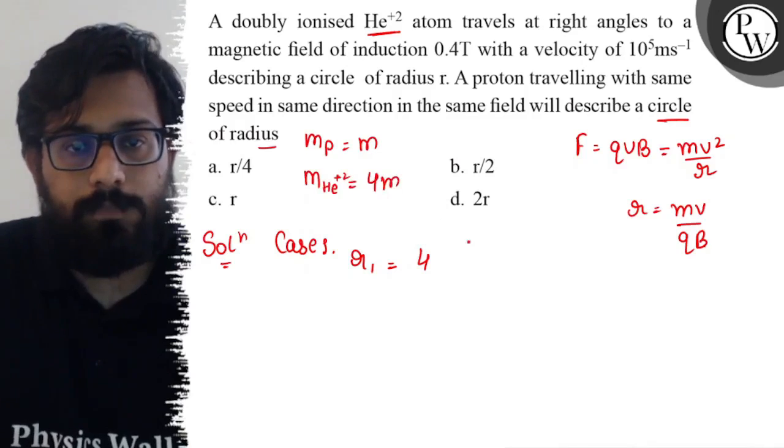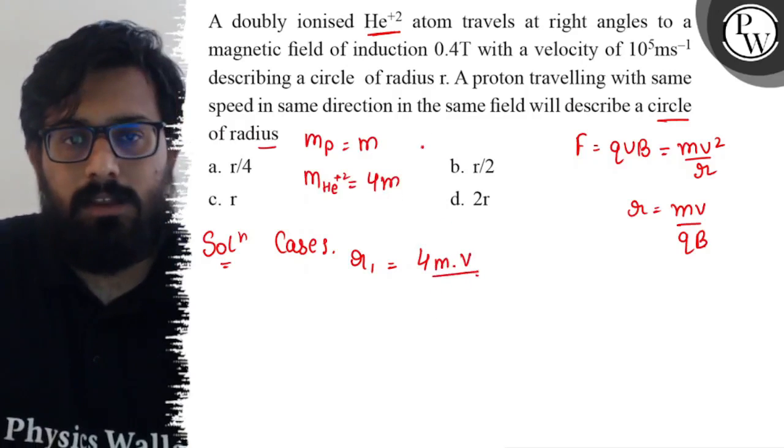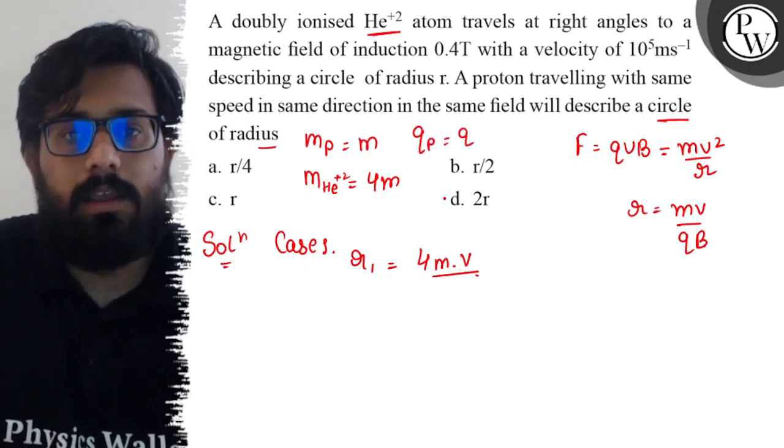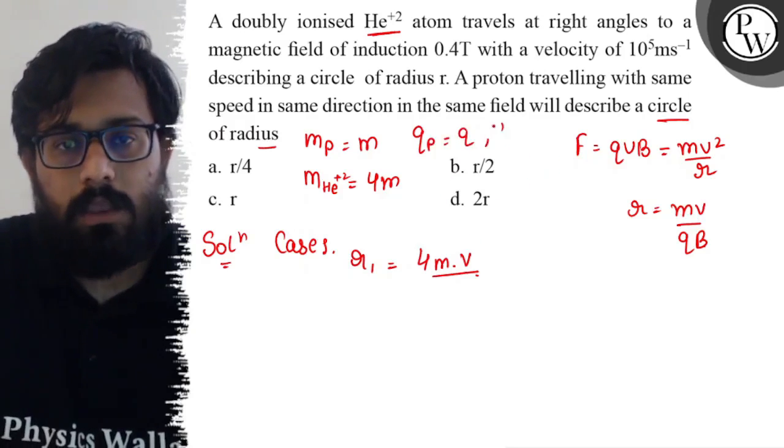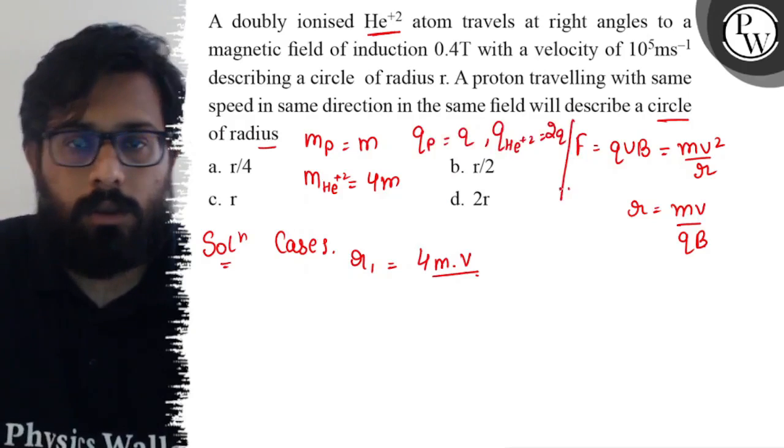So 4m times v divided by charge. The charge of the proton, if I take as q, then the charge on the helium atom comes out to be 2q. So you have 2q times B.